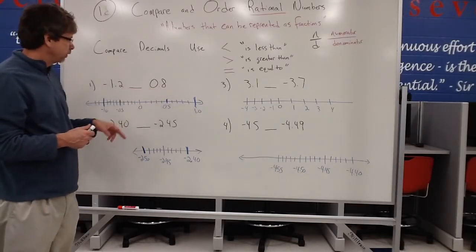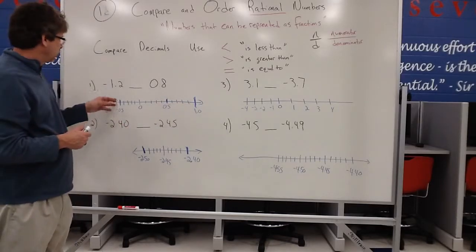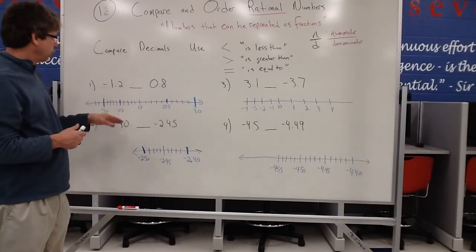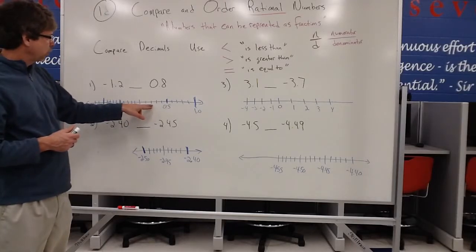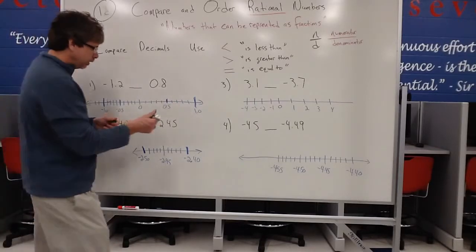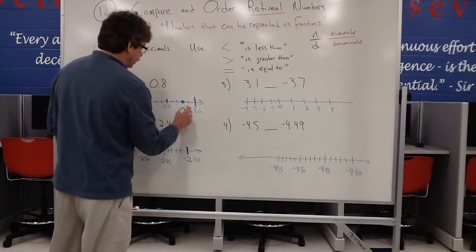Since these go out to the tenths place, it's not too hard to make a scale that counts by tenths. And since I'm kind of moving around zero, I want to include zero here. So there would be 0.1 or 1 tenth, 2 tenths, 3 tenths, 4 tenths, 5 tenths, 6 tenths, 7 tenths. Eight tenths would be located at this spot right here. So that's 0.8.